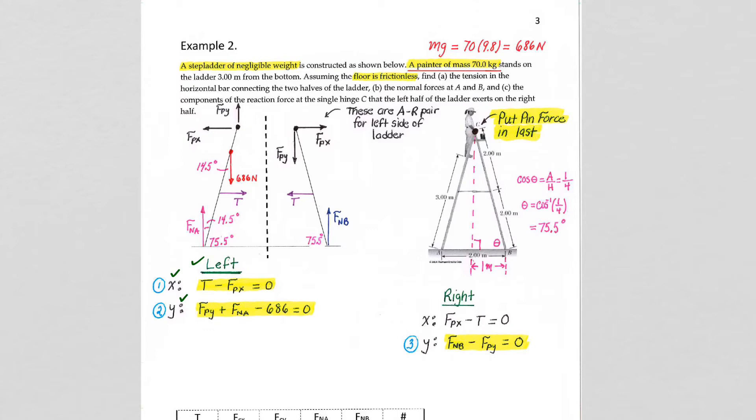Same thing for the right side of the ladder. Sum of the forces in the x equals 0. Sum of the forces in the y equals 0. So, again, pause the video. Make sure that you are okay with those force equations.